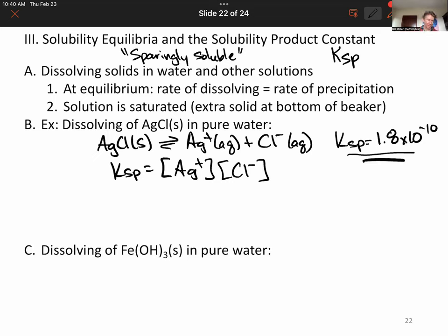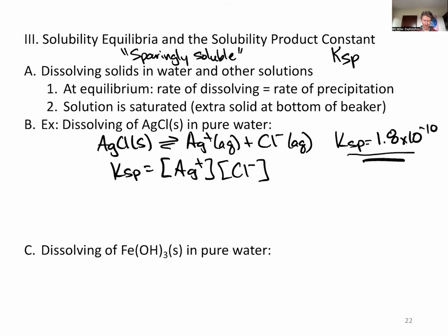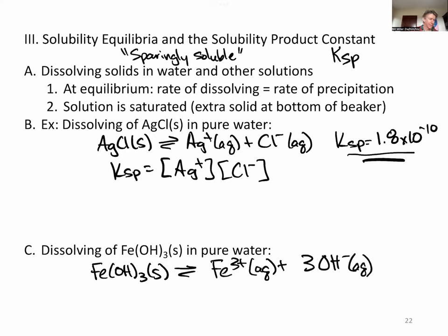We can do a similar thing for the dissolving of iron 3 hydroxide, Fe(OH)3, in pure water. We would write this as: take whatever it is, break it up into its ions. This is going to be iron 3 plus plus 3 hydroxides. It has a Ksp of 2.8 times 10 to the minus 39.